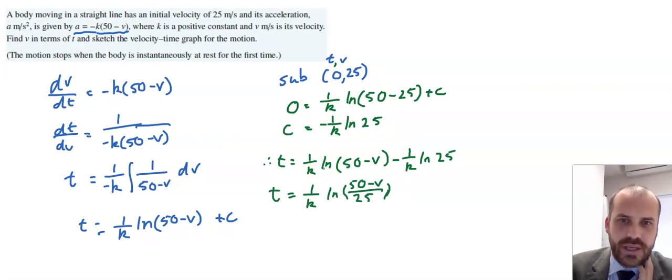This neat little value here, when the velocity is equal to 0, the time is ln(2) over k. That's this point right here.